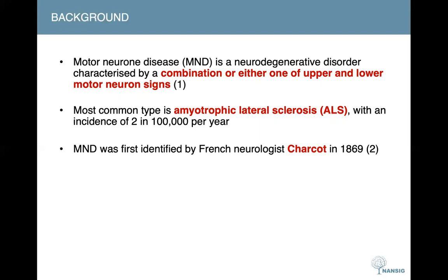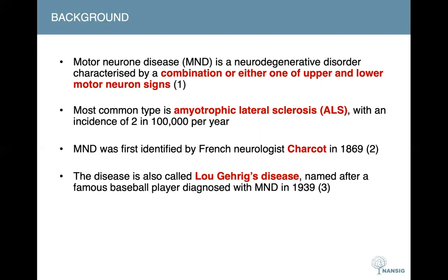MND is also known as Charcot's disease in honor of the first person to describe it, French neurologist Jean-Martin Charcot, back in 1869. The disease became well known in the United States when baseball player Lou Gehrig was diagnosed in 1939. Hence, Lou Gehrig's disease is interchangeably used with ALS, Charcot's disease, and MND, given that it's the most common motor neuron disease.